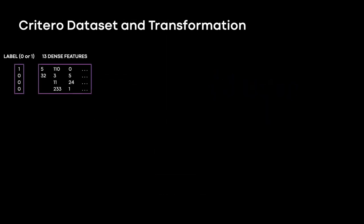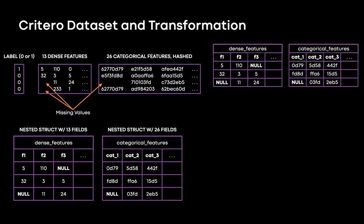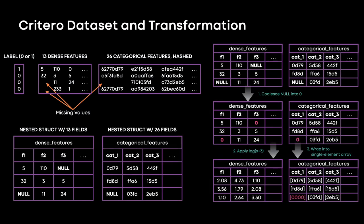Let's take a concrete example with the Criteo dataset. The Criteo dataset is one of the largest open-source datasets in the recommendation domain for researchers to evaluate their models. The raw text data contains many rows — each line has 40 columns: the first column as the label, 13 dense feature columns, and 26 categorical feature columns. We represent dense and categorical features as nested structures with 13 and 26 fields respectively. These files could be stored as Parquet to allow columnar reading and more efficient transformation.